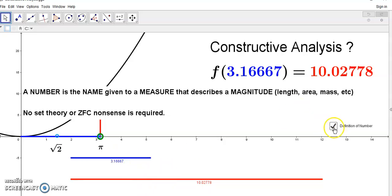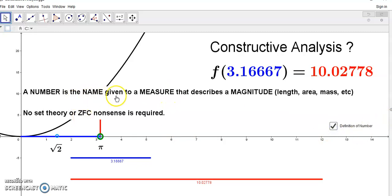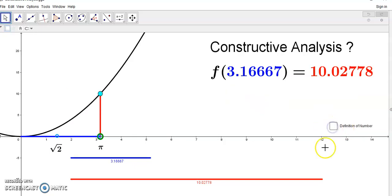Because mainstream academics have never understood the concept of number, there was this path to the flawed theory of limits and real analysis and irrational numbers and real numbers. There's no such thing as an irrational number because a number is the name given to the measure that describes a magnitude. And you can find all these things in my free ebook to which I will give you a link. You can download it and there's a lot of information in there that will teach you real mathematics and not the mathematics that you've been learning in the past.